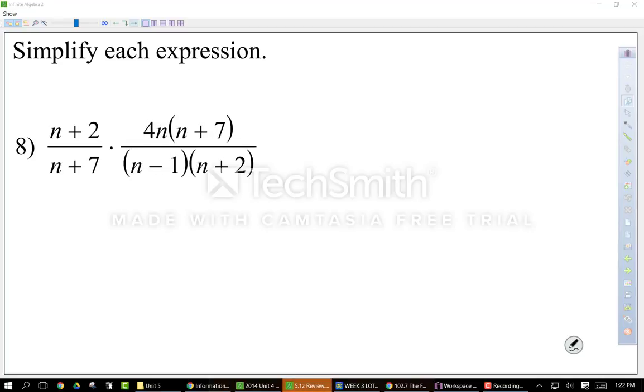So here we go. Well, n plus 2 is the same binomial as this n plus 2. Because they're on a diagonal and I'm multiplying fractions, I can cross simplify. Cross simplify. That's what you're doing. I'm crossing out like things. Well, this n plus 7 and this n plus 7 are also on the diagonal. Therefore, they can also be canceled out. What do I have left? I have 4n over n minus 1. Binomial here. Monomial here. I know I can't go any further. So that is my answer.